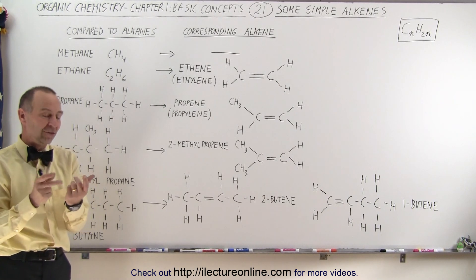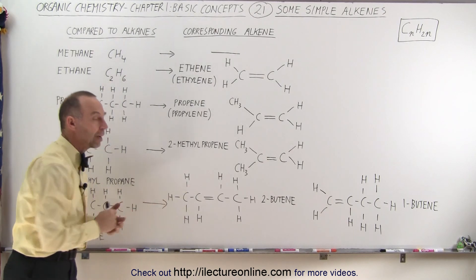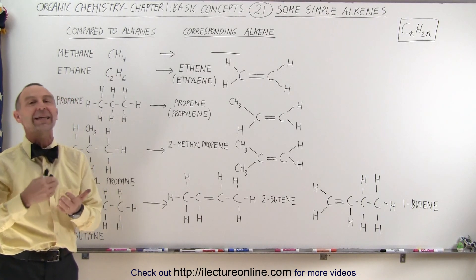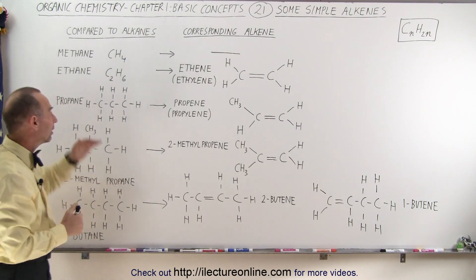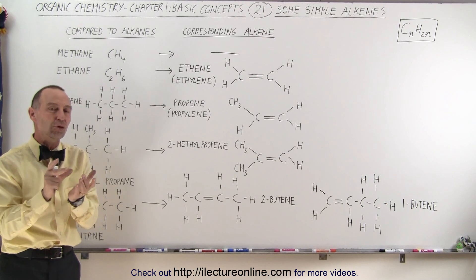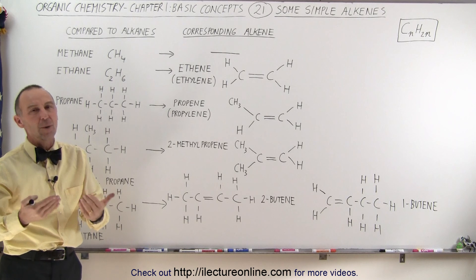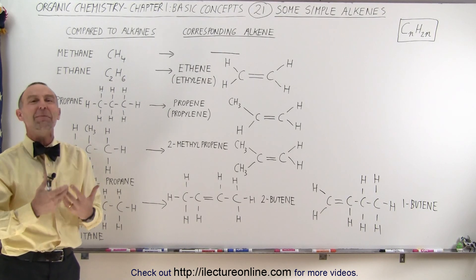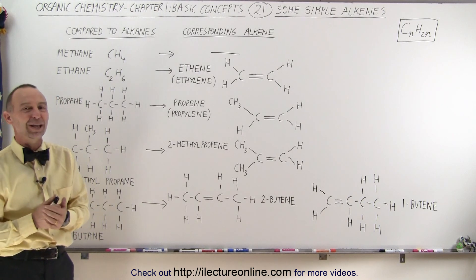Because there are combinations of where we can add alkyls and where we can place the double bond, alkenes have more isomers than alkanes. We're going to go through the family of initial alkenes, show you all the various isomers, and explain why they're structured and named the way they are — because there is actually a method to the madness when it comes to naming organic molecules. So stay tuned and we'll go through those.